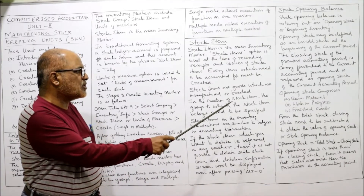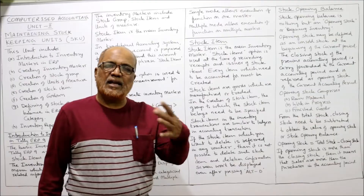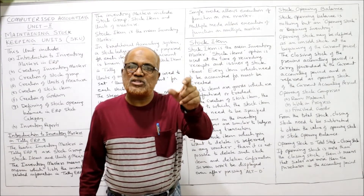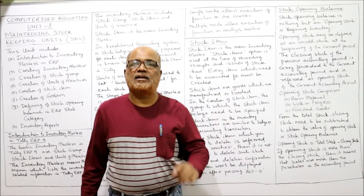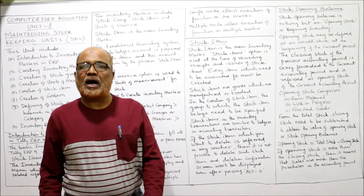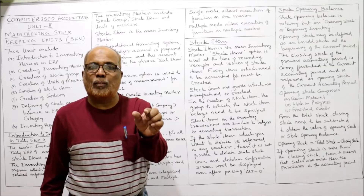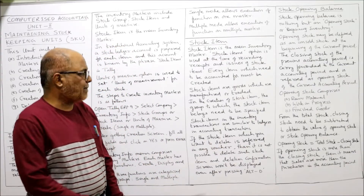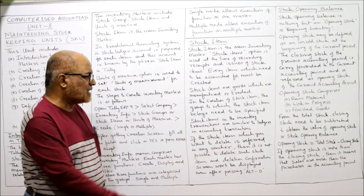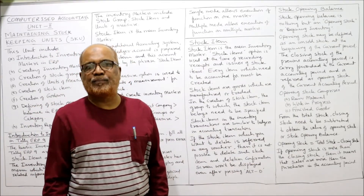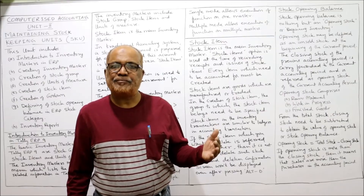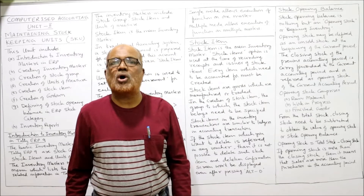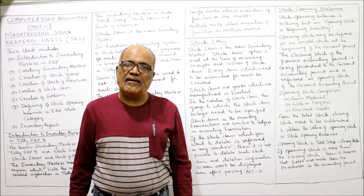In the creation of a stock item, the group to which the stock item belongs needs to be specified. So directly we cannot create the stock item — we have to specify in which stock group this stock item should be created. Before creating the stock item, we should be clear regarding stock group. Stock item in inventory transactions is similar to ledgers in accounting transactions — in normal accounting transactions we call it a ledger, and in Tally ERP 9 we call it a stock item.